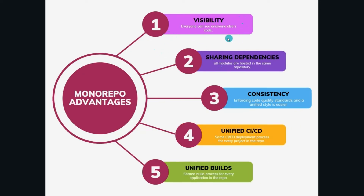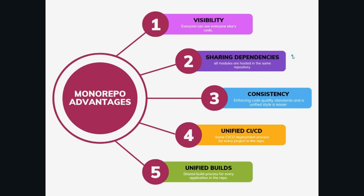Number one: visibility — everyone can see everyone else's code. Number two: sharing dependencies — one person or some members of a team can create a library and push it to the single git repository, and anyone in any team who needs that library can import and use it. Sharing dependencies is super easy in mono repos. Number three: consistency — enforcing code quality standards and a unified style is much easier when working with mono repos.